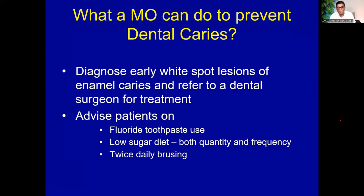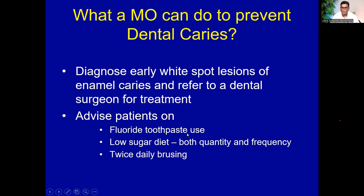What can we do as medical officers to prevent dental caries? If you can diagnose white spot lesions at their early stages, those caries lesions can be reversed totally. If you peep into a patient's mouth to look for the tongue or mucosa, just look around the teeth. If you notice any white spot lesions, ask the patients to go and see a dentist. Also, advise patients on fluoridated toothpaste, low sugar diet — both frequency and quantity — and twice daily brushing.